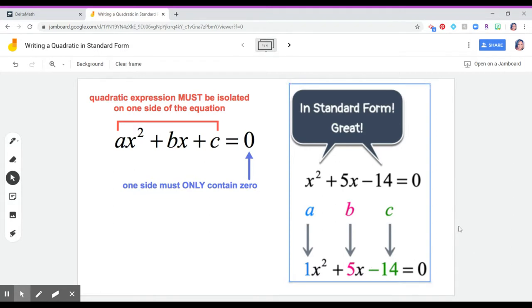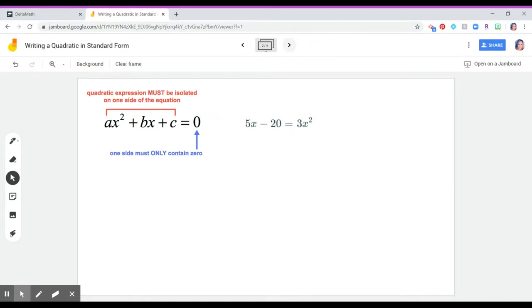So some of the problems you might see in delta math are going to look like this. And what they're going to ask you to do is to rewrite this into standard form. So I'm going to write a little note to us. Here's the things that we need. But if you want to write on your paper to start off, ax squared plus bx plus c equals zero.